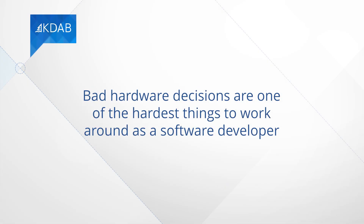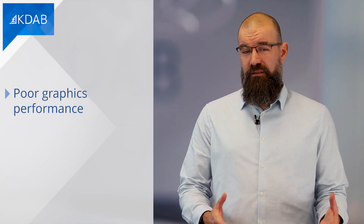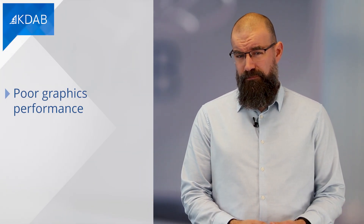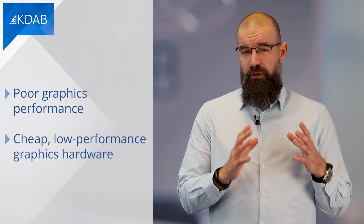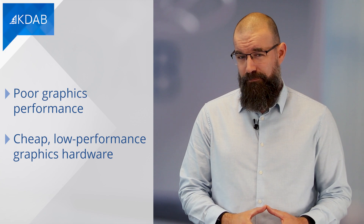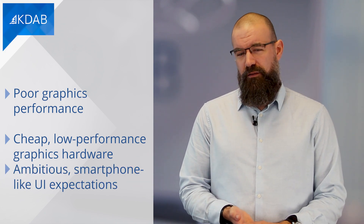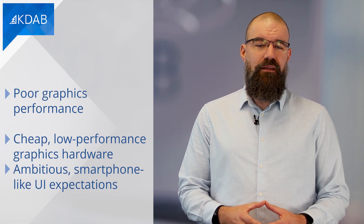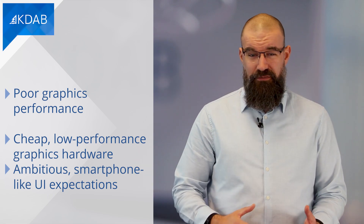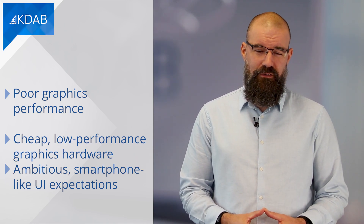Bad hardware decisions are one of the hardest things to work around as a software developer. One of the most common problems we get asked to fix is poor graphics performance. And in many cases, the problem boils down to cheap, low-performance graphics hardware combined with ambitious, smartphone-like UI expectations. Often in these situations, the only thing we can do is turn off the fancy animations and simplify the UI to hide the hardware deficiencies.